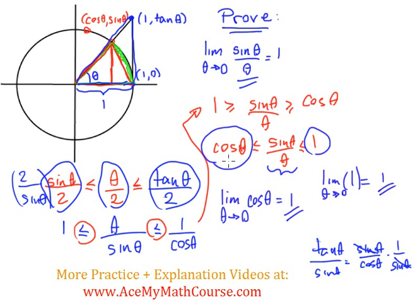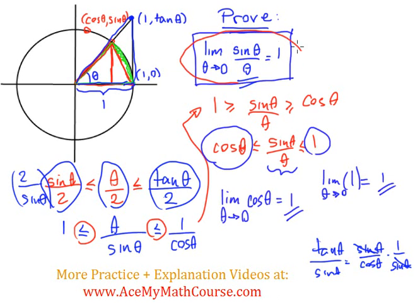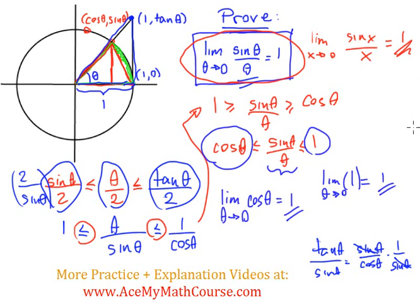The limit of cos(θ) as θ→0 is 1, and the limit of 1 as θ→0 is also 1. So it follows that the limit as θ→0 of sin(θ)/θ is 1, because it's squeezed between those two. According to the Squeeze Theorem, we've proven that. Most times we just take it as given — you'll most commonly see it written as x: the limit as x→0 of sin(x)/x = 1.